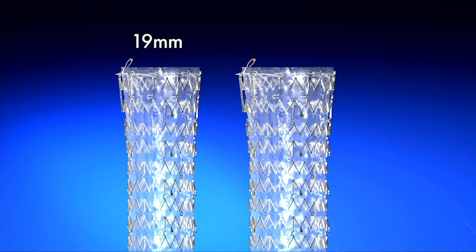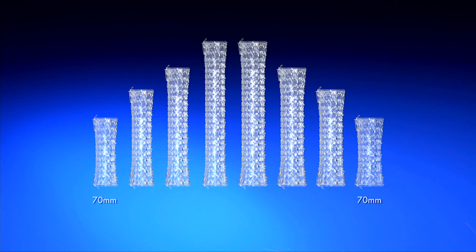The Endomax is offered in 19 mm and 23 mm diameters and lengths of 70, 100, 120 and 150 mm to accommodate a broad range of anatomical and stricture sizes.